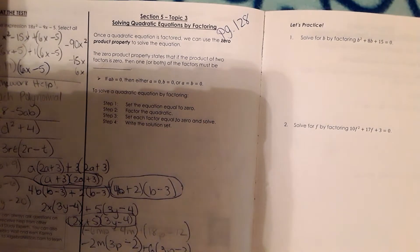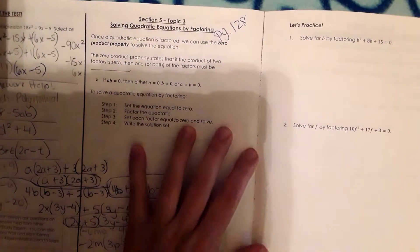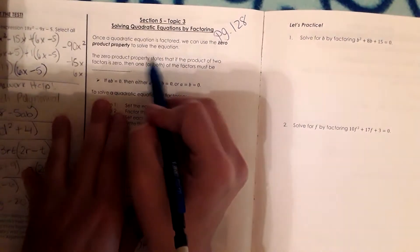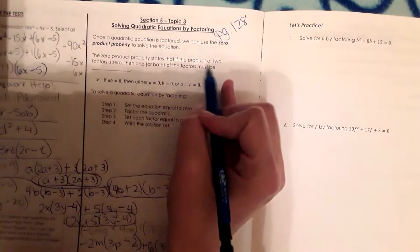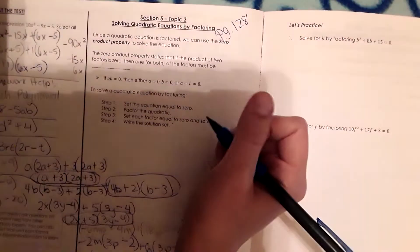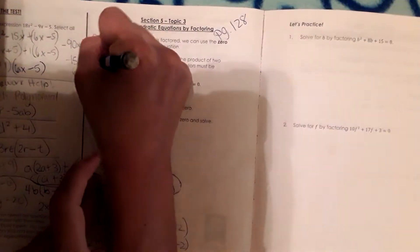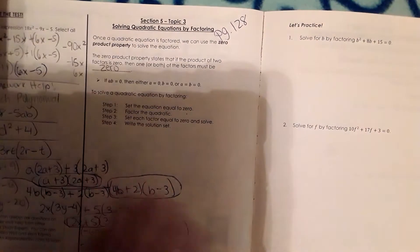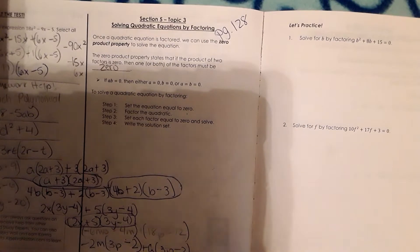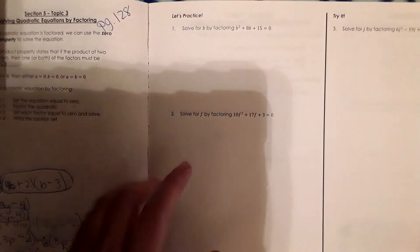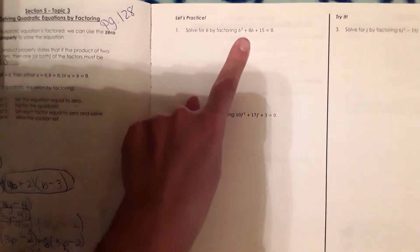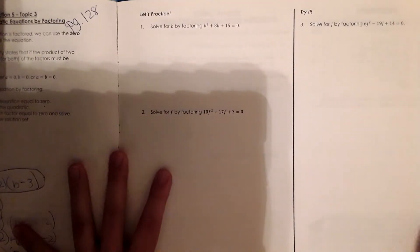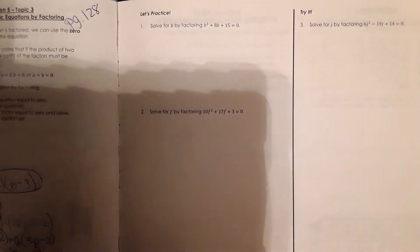So it says once a quadratic equation is factored, we can use the zero product property to solve the equation. The zero product property states that if the product of two factors is zero, then one or both of the factors must be zero. Only makes sense. So we are going to not only factor these quadratics, we are also going to solve them by setting the factors equal to zero.